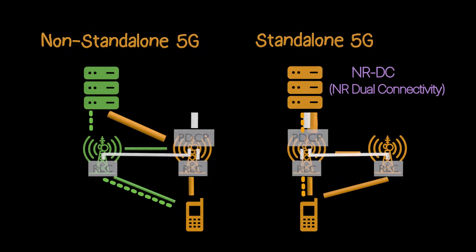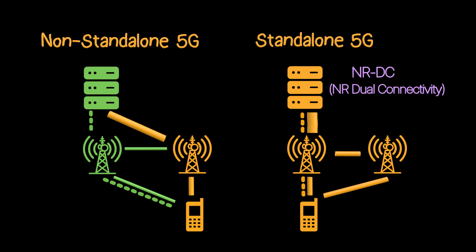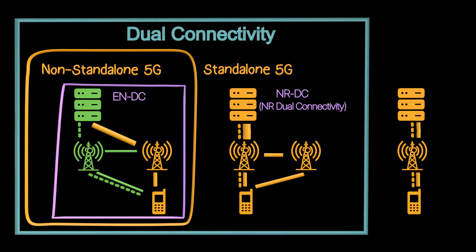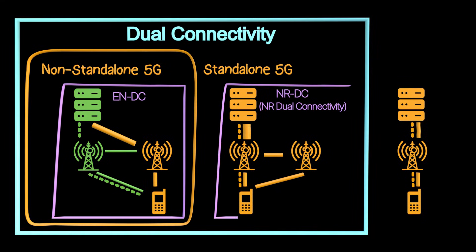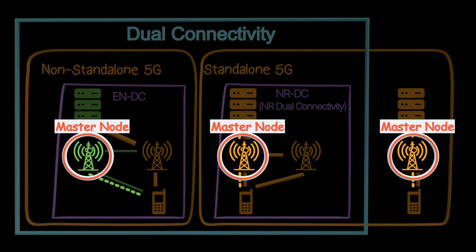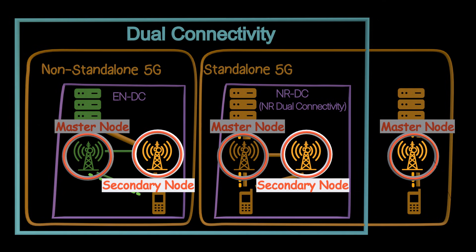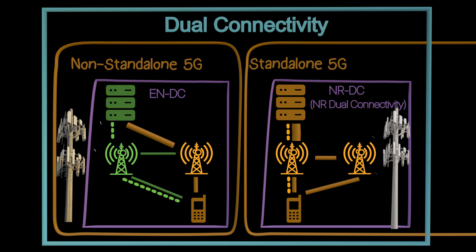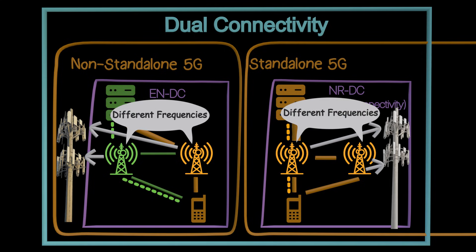These are the fundamental concepts. ENDC is a non-standalone deployment of dual connectivity. NRDC is a standalone deployment of dual connectivity. In all these deployments, the base station sending higher layer control is the master node, and the other is the secondary node. In dual connectivity, both base stations are usually co-located on the same tower, but they operate on different frequencies. Co-location keeps your phone in range of both base stations, which is essential for dual connectivity.